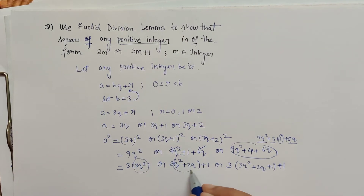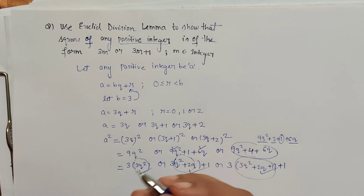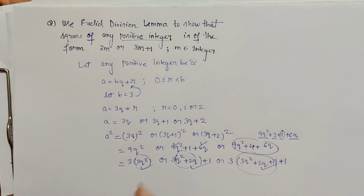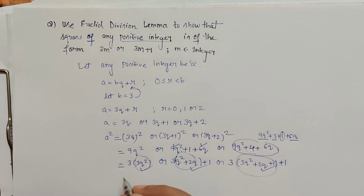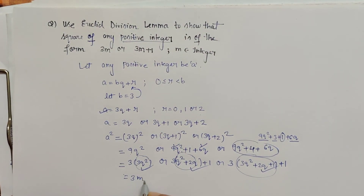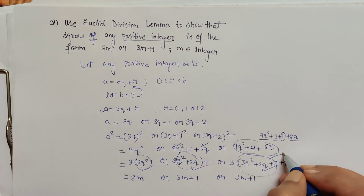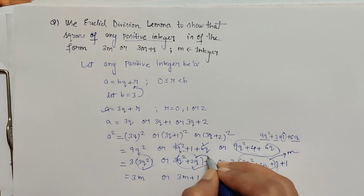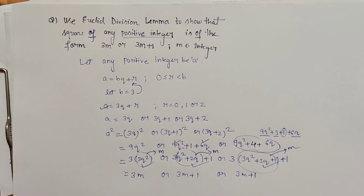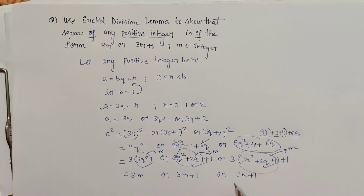As we can see, 3q², q² + 2q, and 3q² + 4q + 1 are all integers. These are three independent cases, so in each case we can replace that integer expression by m. Therefore, the square of any positive integer can be written as 3m, or 3m + 1, or 3m + 1 — the complete expression is replaced by m in each case. This is how we prove that the square of any positive integer is of the form 3m or 3m + 1. Thank you.